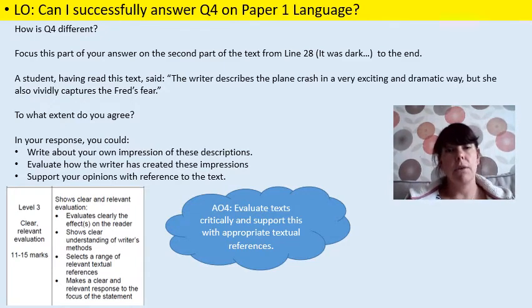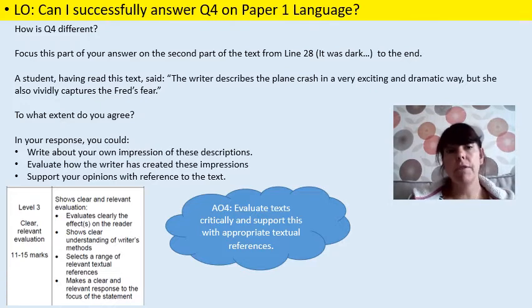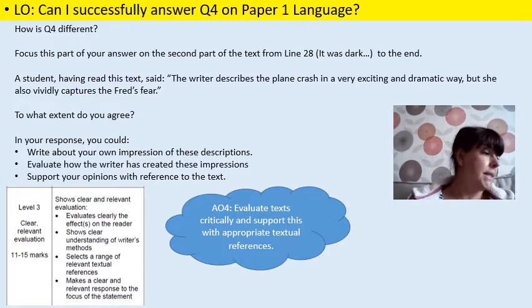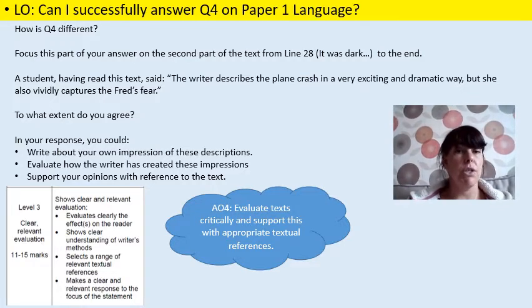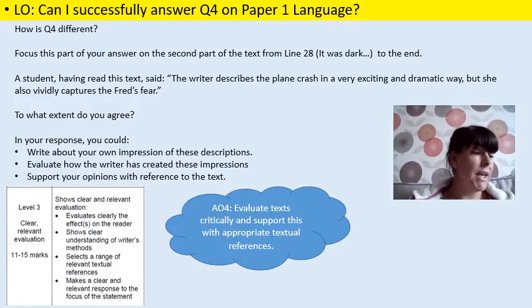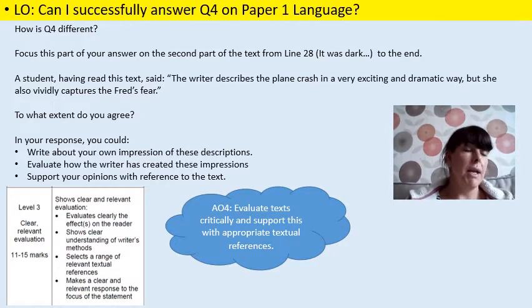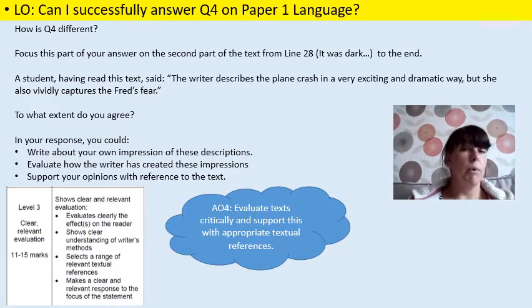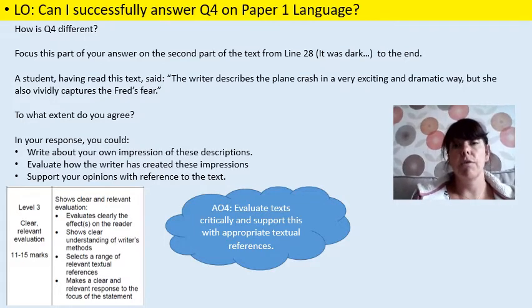Very often students forget that bullet point and they don't use any terminology, but it's really important that you do. Bullet point three is: select a range of relevant textual references — so you're picking your good quotes to support your answer. The final bullet point is: make a clear and relevant response to the focus of the statement. The only really new thing here is the top bullet point — evaluates clearly the effects on the reader. So we're introducing AO4: evaluates texts critically and supports them with appropriate textual references.